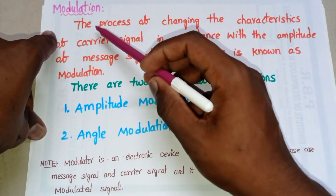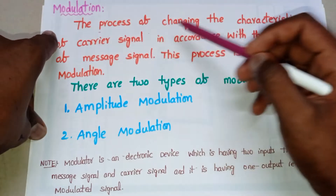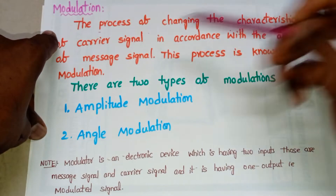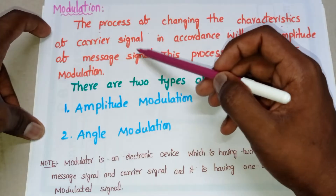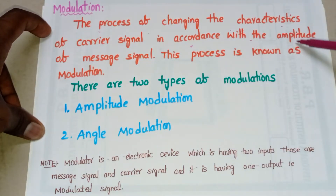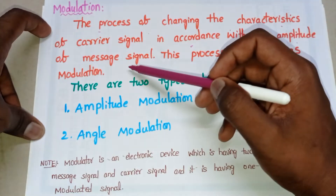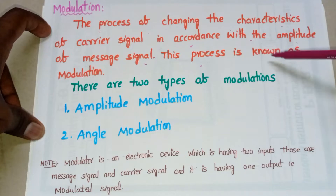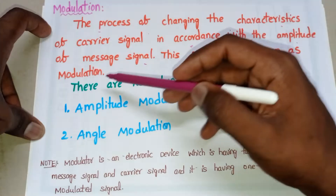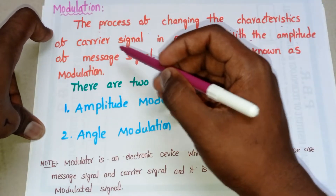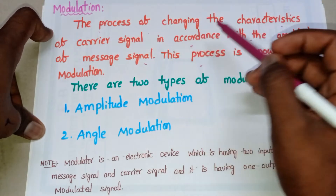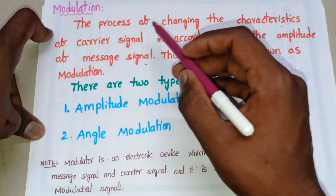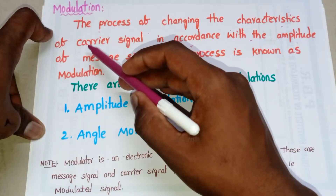First, let's see the definition of modulation. The process of changing the characteristics of a carrier signal in accordance with the amplitude of the message signal is known as modulation. In modulation technique, we have two types of signals: the carrier signal and the message signal.